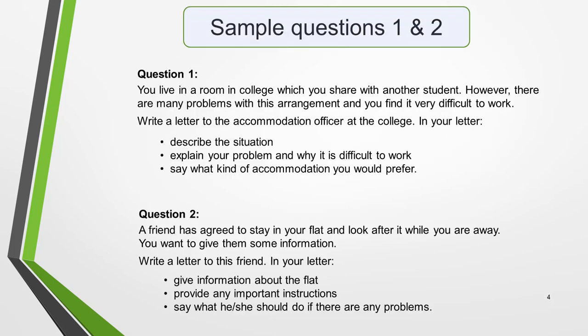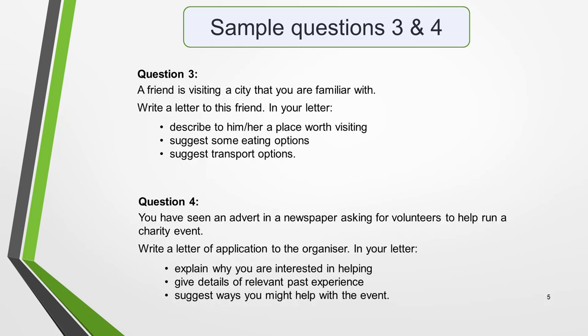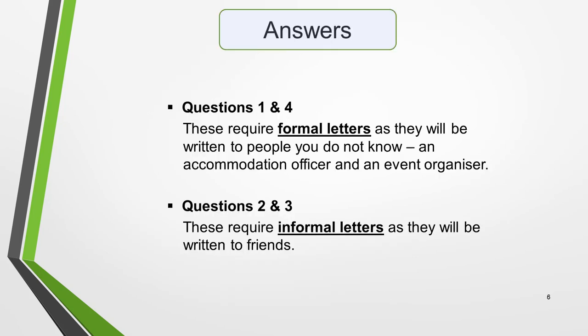So, let's look at some sample questions and decide which tone and style we should use for each. Pause the video and read through the four questions on this slide and the next. Decide whether you would write a formal or informal letter for each one. Here are the answers. Questions 1 and 4 require formal letters, as they're written to people you do not know — that is, an accommodation officer and an event organiser. Questions 2 and 3 require informal letters as they're written to friends.